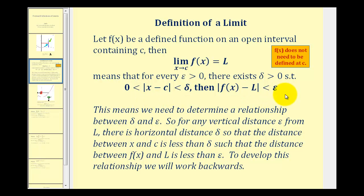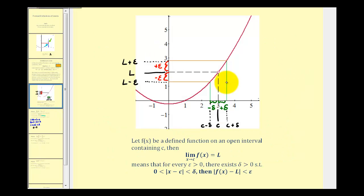To develop this in a problem we're actually going to work backwards, but let's look at this graphically first. If we generalize that first graph, let 3 on the x-axis equal c and let 2 on the y-axis equal L. Let epsilon be this vertical distance, so this interval would be L minus epsilon to L plus epsilon. If we let delta be this horizontal distance, the interval would be c minus delta to c plus delta. The idea of the formal definition is that if we're given some epsilon that produces a vertical interval around our limit L, there must be some horizontal distance delta such that inputs into the function in that interval produce outputs in the interval from L plus or minus epsilon. The key to writing these proofs is developing a relationship between epsilon and delta.